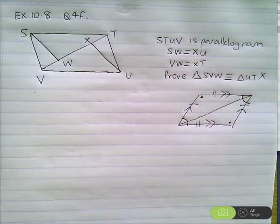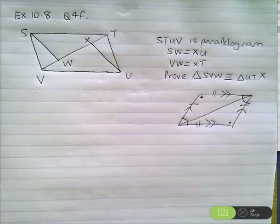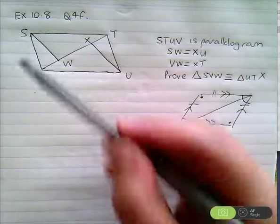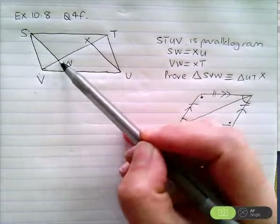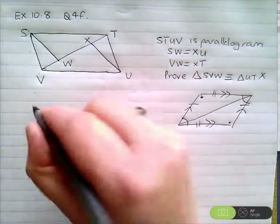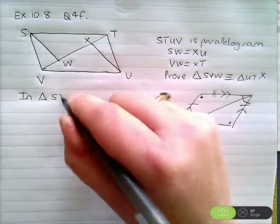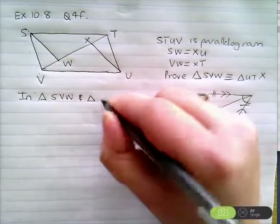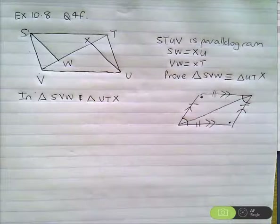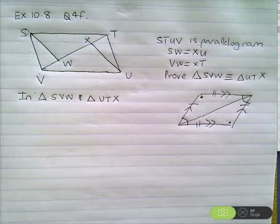If you draw a really long parallelogram, it will be very obvious to you that diagonals do not bisect the angles. All right, you have to prove that triangle SVW — this little one over here — is congruent to triangle UTX. So what do you think you might do? We start off saying: in triangle SVW and triangle UTX. Let's do the sides first, they're easier.